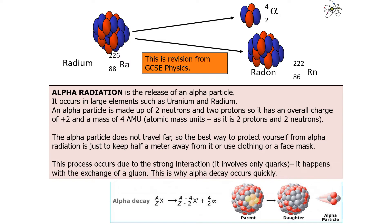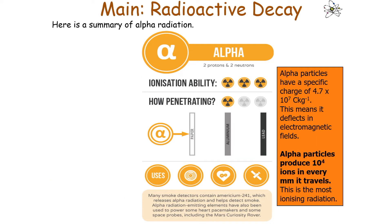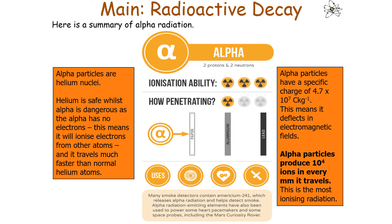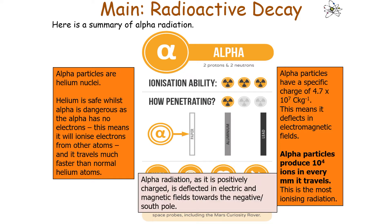Alpha radiation is the release of an alpha particle — two protons and two neutrons — and occurs in large elements like uranium and radium. The alpha particle doesn't travel very far; the best protection is to keep about a metre away or use clothing or a face mask. This process occurs via the strong interaction with the exchange of a gluon. Alpha particles deflect in electromagnetic fields and produce 10⁴ ions per millimetre — the most ionising type of radiation. As alpha particles are positively charged, they are deflected in electrical and magnetic fields towards the negative plate and south pole.